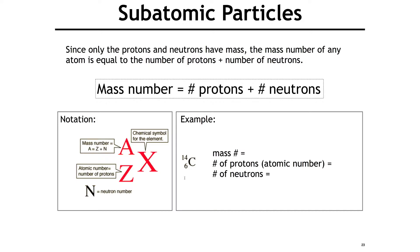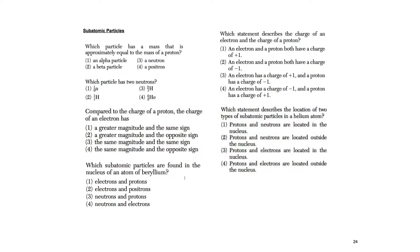This is always the first question on your Regents — no reason to get it wrong. Which particle has a mass approximately equal to the mass of a proton? The neutron — both are 1 amu. Which particle has two neutrons? It's helium: mass number 4 minus 2 protons gives 2 neutrons. Compared to a proton, the charge of an electron has the same magnitude — both are 1 — but the opposite sign: +1 versus -1.